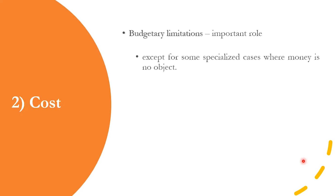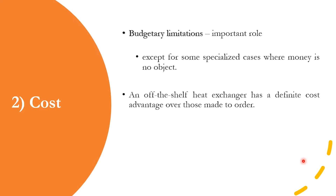The second criterion is cost. This is dictated by budgetary limitations — except for some specialized cases where money is no object, which definitely does not happen in industry, because in industry time is money. Off-the-shelf heat exchangers have a definite cost advantage over those made to order.